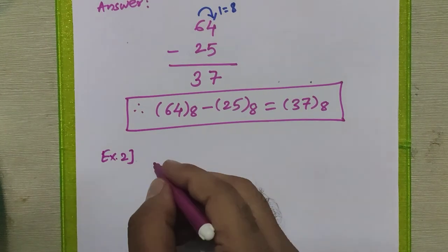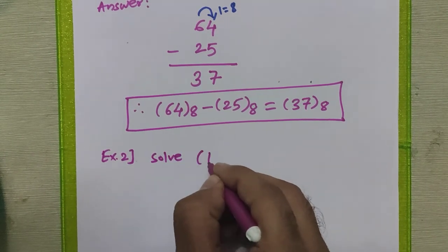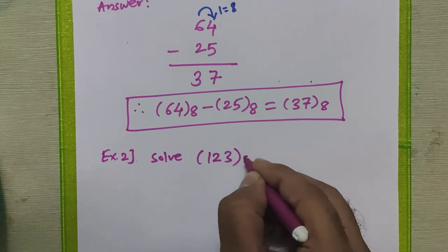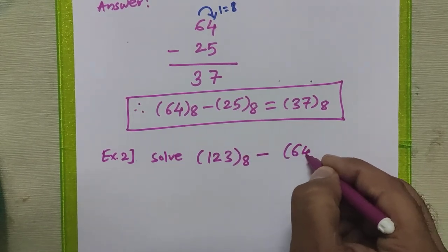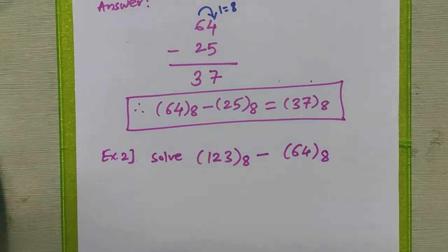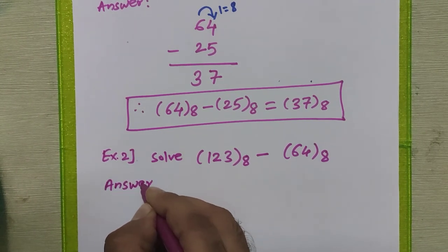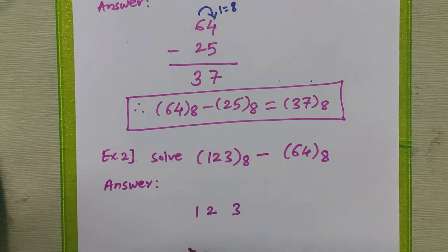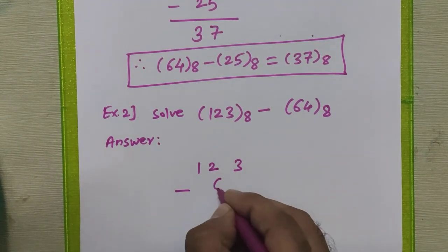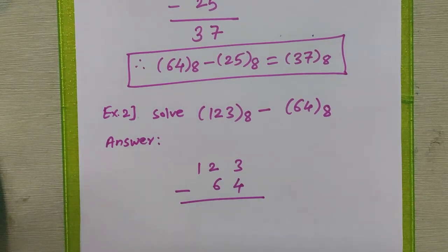In the second example, we are going to solve 123 in octal minus 64 in octal. We will write the details as given: 123 in octal minus 64 in octal, and perform the subtraction.